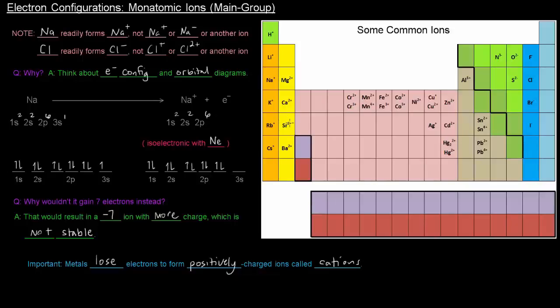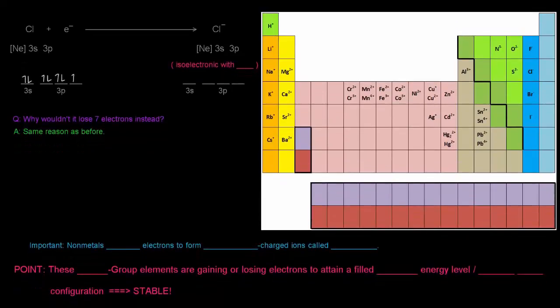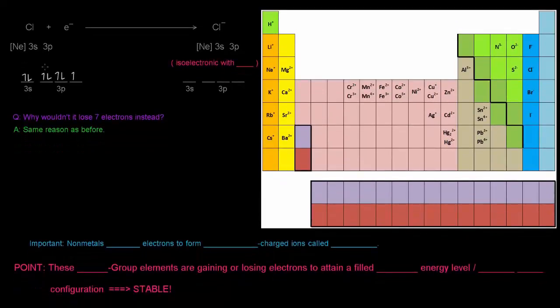Chlorine, on the other hand, has a configuration of everything up until neon and then 3s2 3p5. Its orbital diagram looks like this: 3s2 3p5. It gains an electron to become Cl-, so that becomes 3s2 3p6, which is isoelectronic with argon.